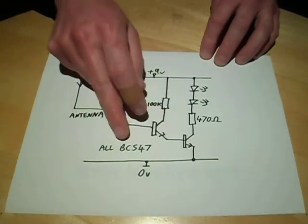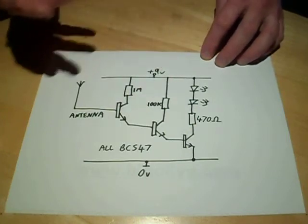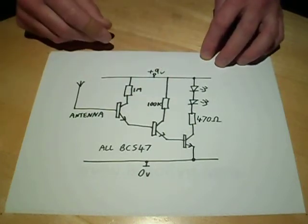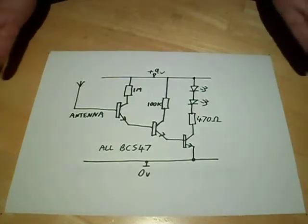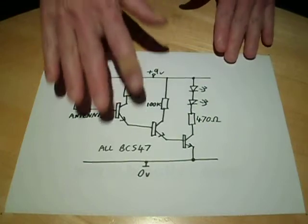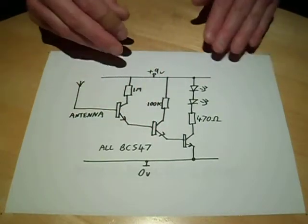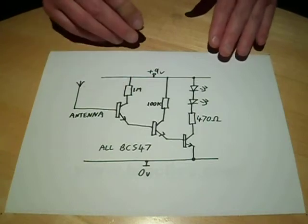Now the transistors used are BC547s. The reason for that is that they're a general purpose NPN transistor in the UK. They really are very common. They're one of the cheapest transistors. I'm not sure what an equivalent would be in America if you can't get the BC547, but the main thing is it's just a general purpose small signal NPN transistor.